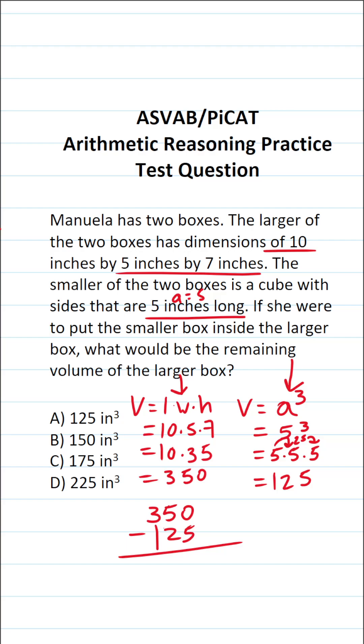And I'm going to do this off to the side so as not to make a mistake. 0 minus 5, we can't do. We have to borrow. This becomes 4. This becomes 10. 10 minus 5 is 5. 4 minus 2 is 2. 3 minus 1 is 2.